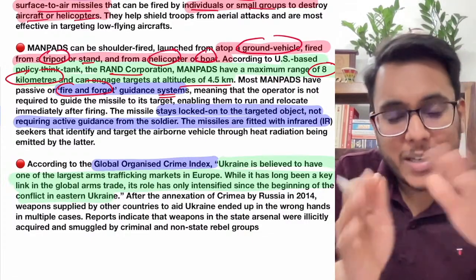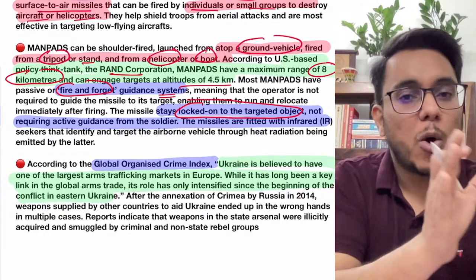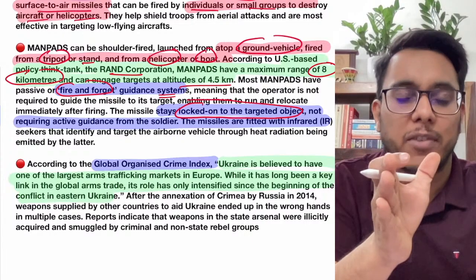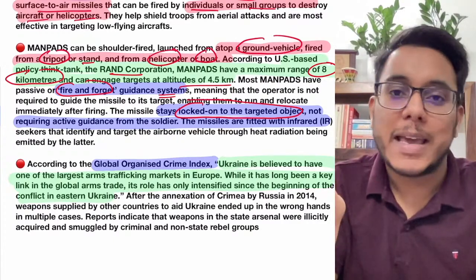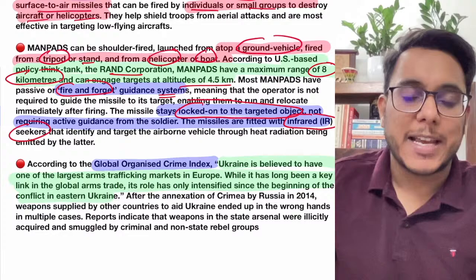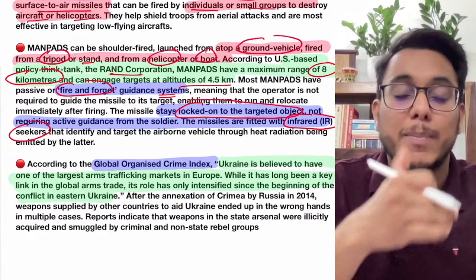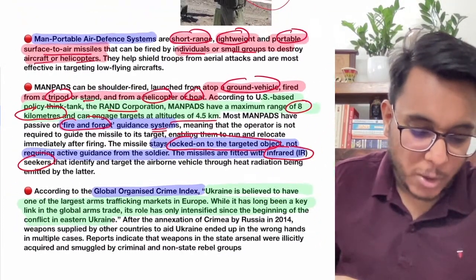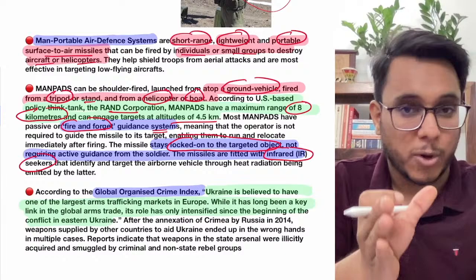Once fired at an aircraft, the missile will automatically track it wherever it goes — you don't have to steer it. This is because MANPADS are fitted with infrared seekers. When fired at an aircraft, the aircraft emits heat, which is sensed by the infrared seekers, and the missile follows and destroys it. The US version is the Stinger missile. Russia has also developed its own versions, and many countries have different versions — it is not unique to the USA.